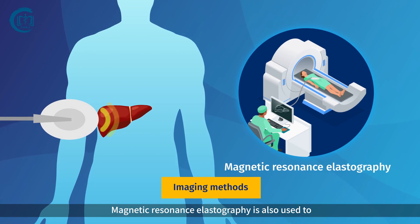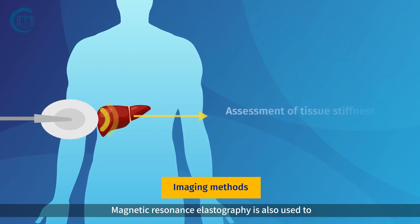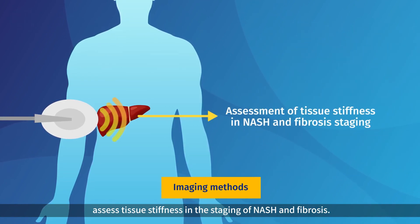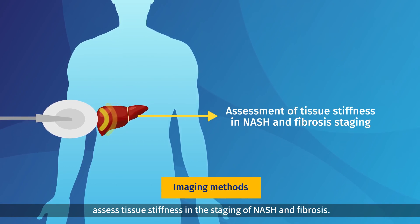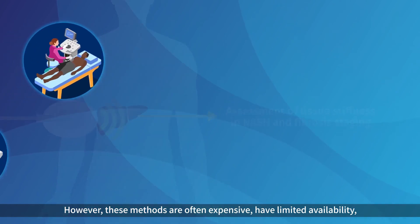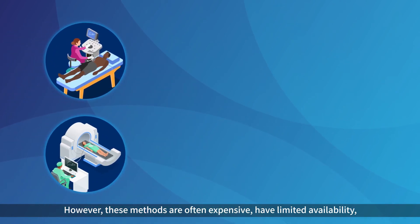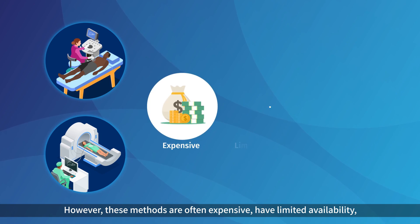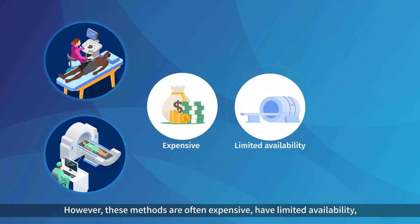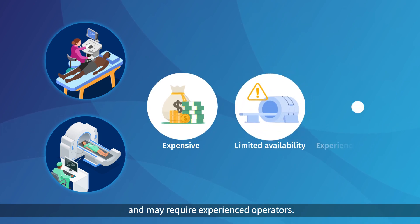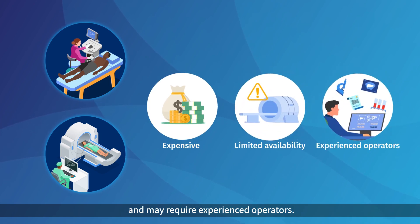Magnetic resonance elastography is also used to assess tissue stiffness in the staging of NASH and fibrosis. However, these methods are often expensive, have limited availability, and may require experienced operators.